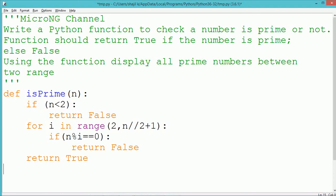Using this particular function, we have to display all the prime numbers between two ranges. That means between two range of numbers.